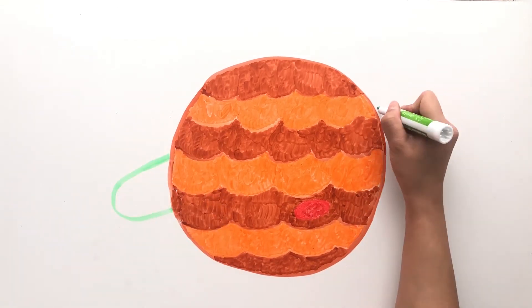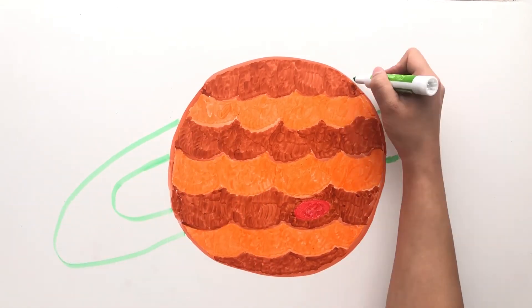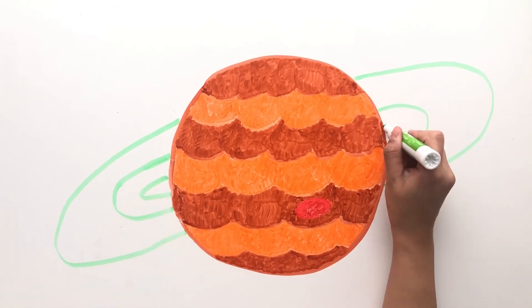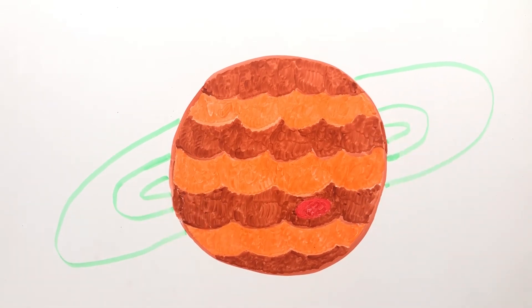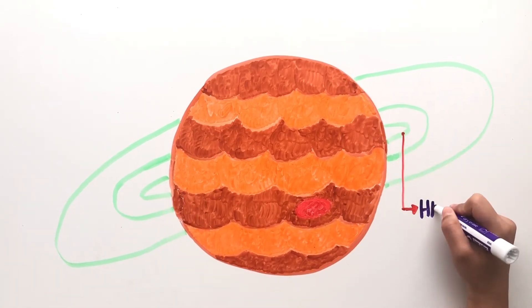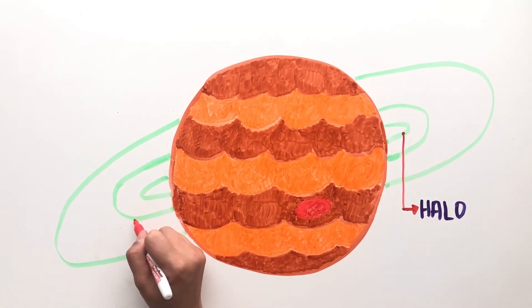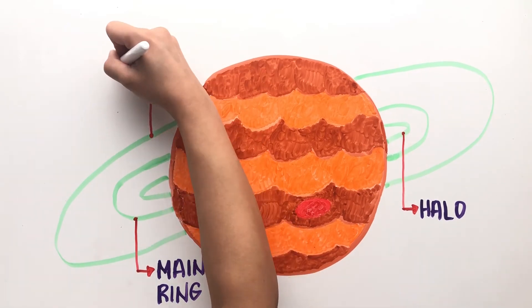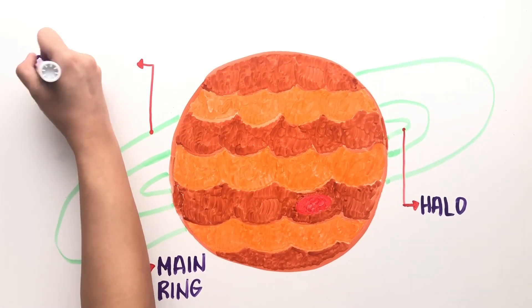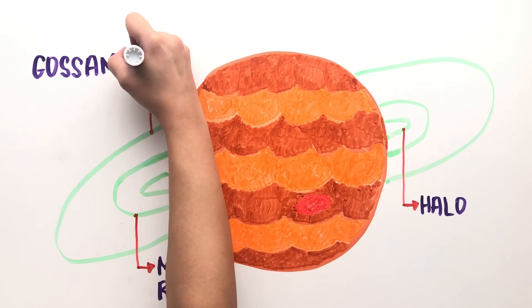Jupiter's rings were first discovered in 1979 when its spacecraft Voyager 1 flew by. The innermost ring is called the halo and looks more like a cloud. The main ring is flatter and relatively brighter than the halo, and the gossamer rings are pretty transparent and consist of debris from nearby moons.